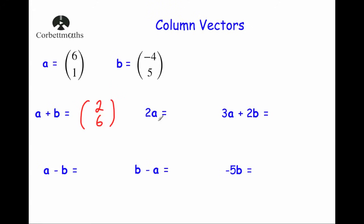Now we're going to multiply a vector by a scalar — a scalar is just a number. If I double vector a = (6, 1), instead of going six right and one up I go 12 right and two up, giving 2a = (12, 2). If there's a number in front of a vector, multiply both components by that number. If it were a 3, I'd multiply by 3, and so on.